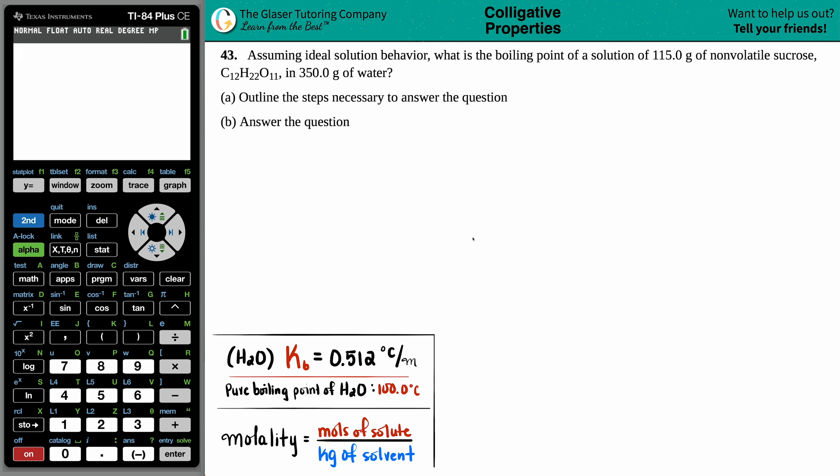Number 43. Assuming ideal solution behavior, what is the boiling point of a solution of 115.0 grams of non-volatile sucrose, C12H22O11, in 350.0 grams of water? We need to outline the steps necessary to answer the question and then answer it.